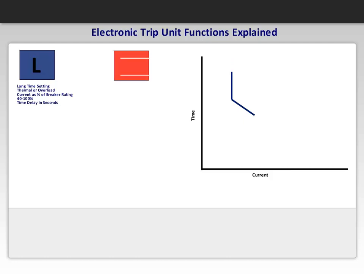Next is S, which stands for Short Time. This setting is associated with the magnetic or short circuit setting, and is set as a multiple of the breaker rating, usually 1 to 10 times, and can be bypassed for just an instantaneous setting. It is represented by the red line on the curve. It, too, can be moved in and out along the current axis, and up and down along the time axis.